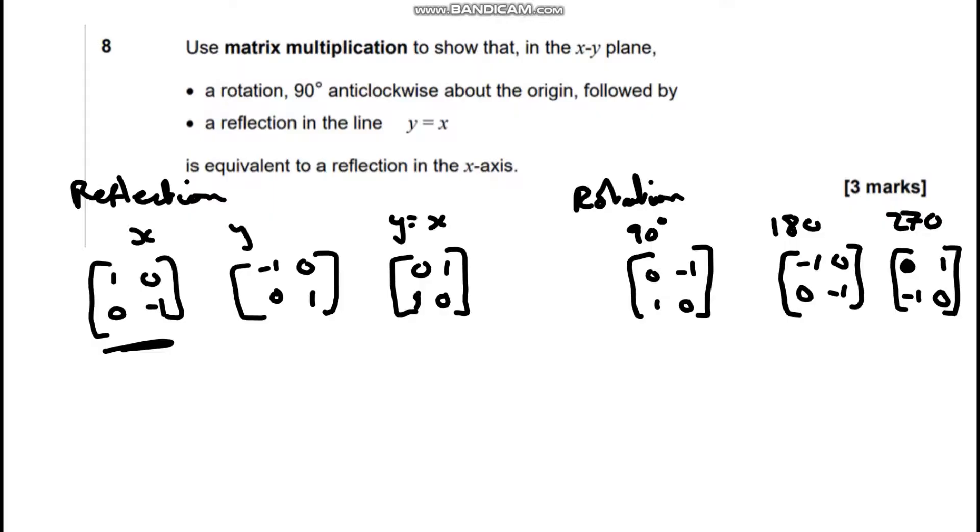The question asks us for a rotation of 90 degrees anti-clockwise, followed by a reflection in the line y equals x. So, we're going to be using this matrix and this matrix. And they're really clear on saying followed by, because with matrix multiplication, the order matters. But it's actually in reverse of what you expect. So, the y equals x matrix will go first, 0, 1, 1, 0, followed by the rotation one.